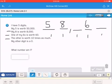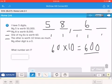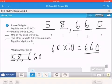The other one is worth 10 times as much. So if I have 60 times 10, the other six is going to be worth 600. In order for it to be worth 600, it needs to go in the hundreds place. And it says my other digit is zero. So my answer would be 58,660.